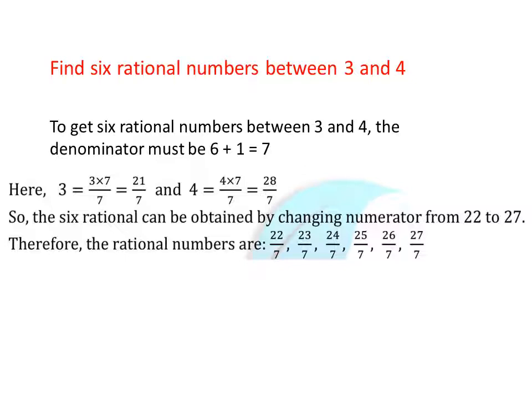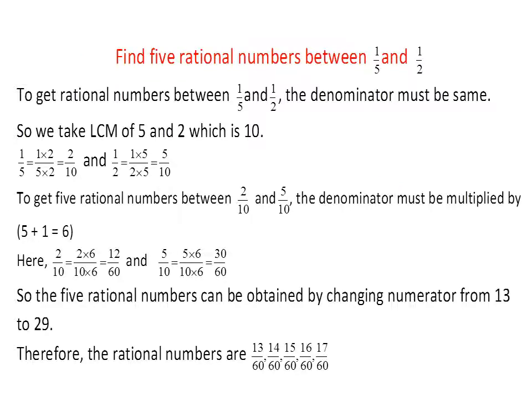The six rational numbers can be obtained by changing the numerator from 22 to 27 — since 21 and 28 are the boundaries, we take the numbers in between. So the six rational numbers are: 22/7, 23/7, 24/7, 25/7, 26/7, and 27/7. One more example follows if we have different denominators.